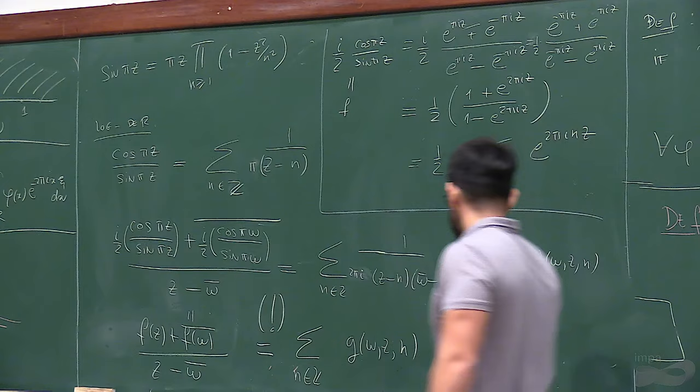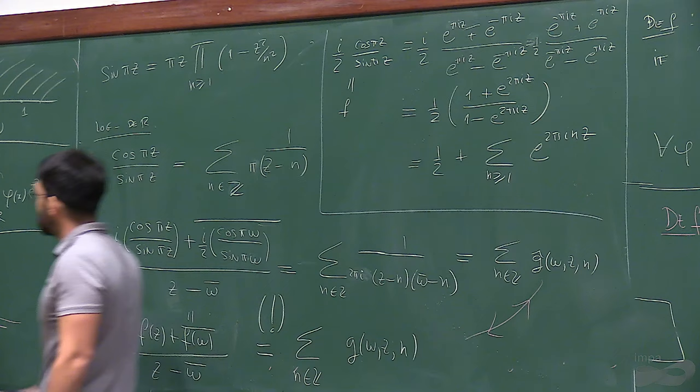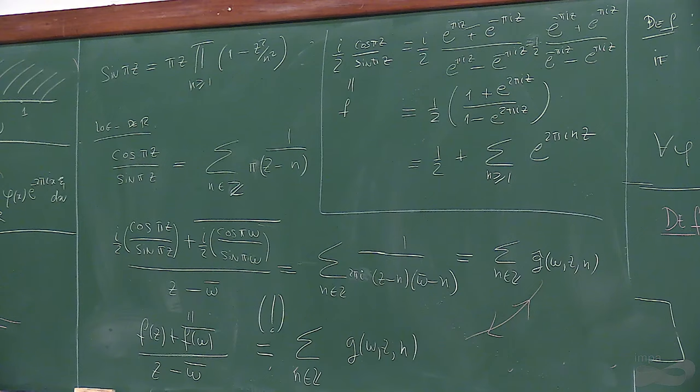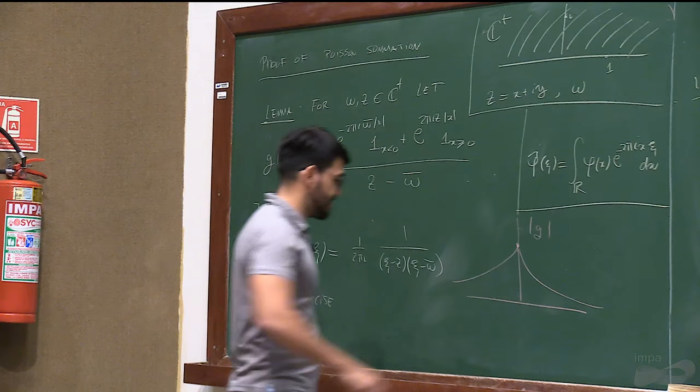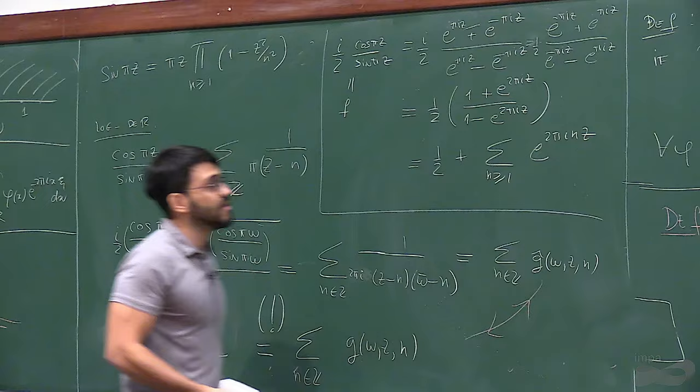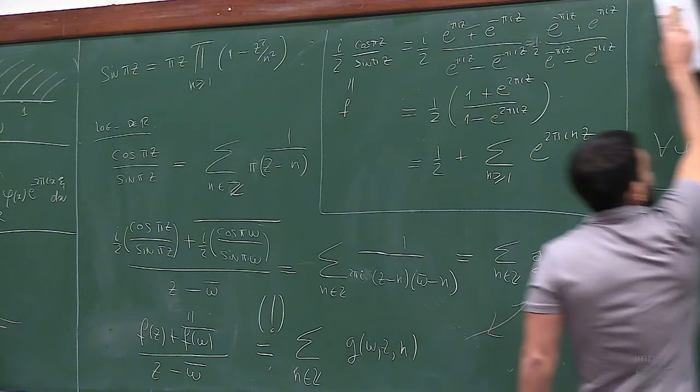So you've just proved Poisson's summation for the function G(w,z) for any w and z in the upper half plane. As an exercise, finish the proof: show that if phi is a test function, you can extend from G to phi.